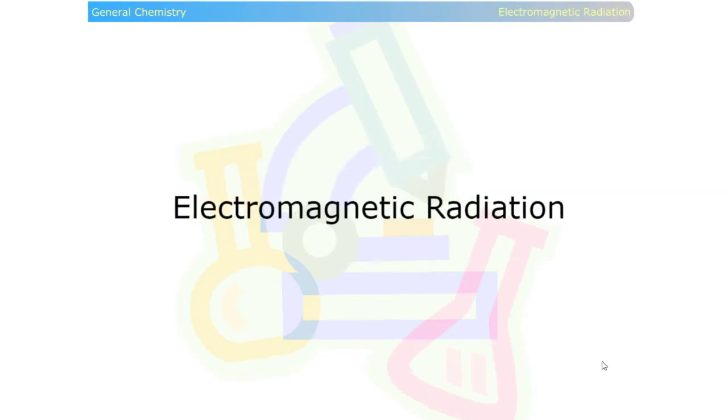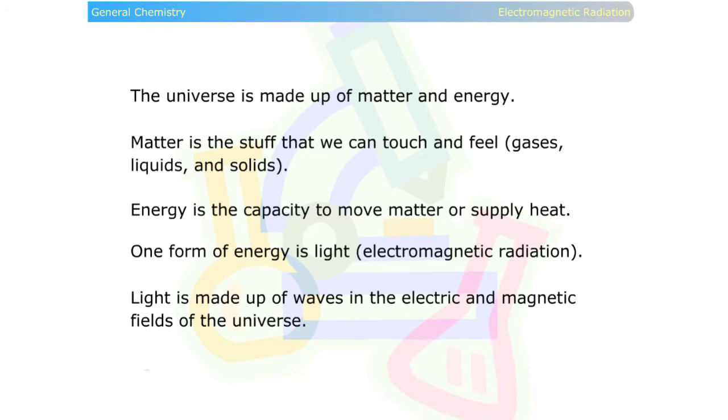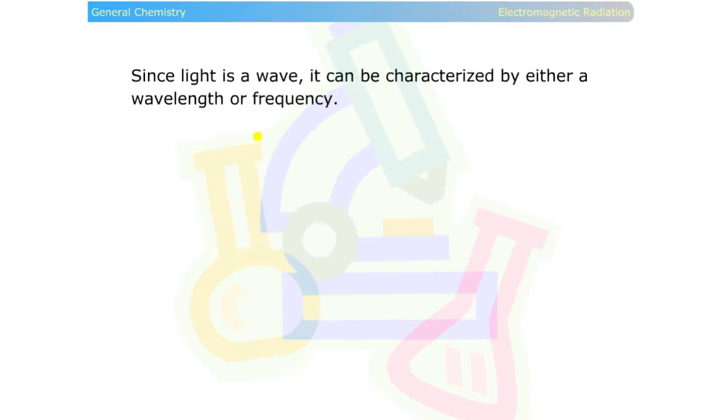Electromagnetic radiation. The universe is made up of matter and energy. Matter is the stuff that we can touch and feel. Energy is the capacity to move matter or supply heat. One form of energy is light. Light is made up of waves in the electric and magnetic fields of the universe.